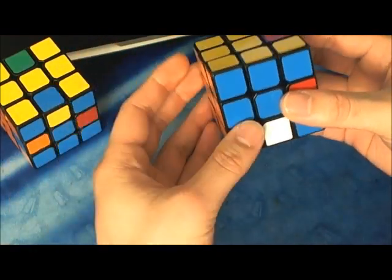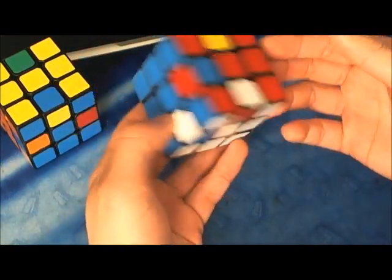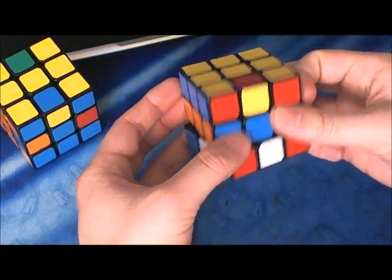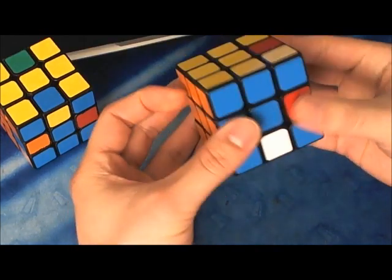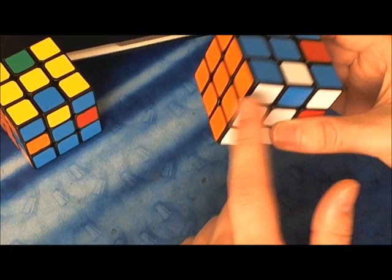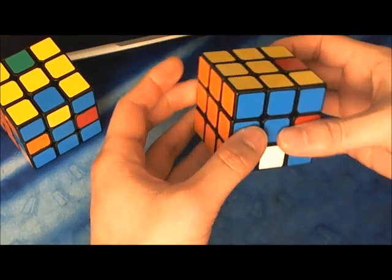But what you can do is over here instead, you can do this handy U, D prime, right? Because if I did U, D prime, it would move these two over here, and the D prime would kick this edge over here, and then I can lift it up. So like this.